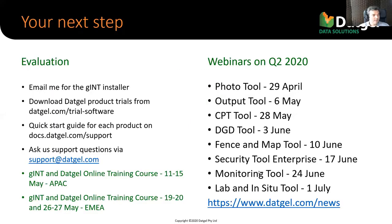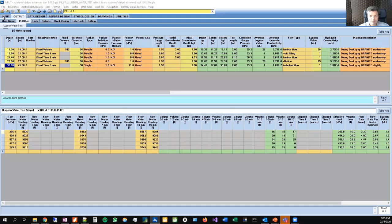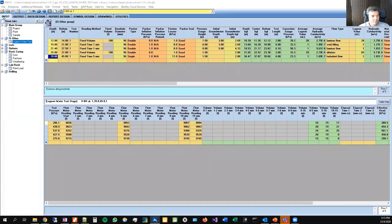A question: are the calculations based on ISO 22282? I haven't attempted to do that — we could look at it if you're interested, but at this moment, no, unless it's exactly the same as Holsby 1976. Another question: are the pressures based on transducer readings within the borehole as well as the gauge? I think it's the gauge, but I'll need to take that question on notice and get back to you. Maybe we can take that question offline.